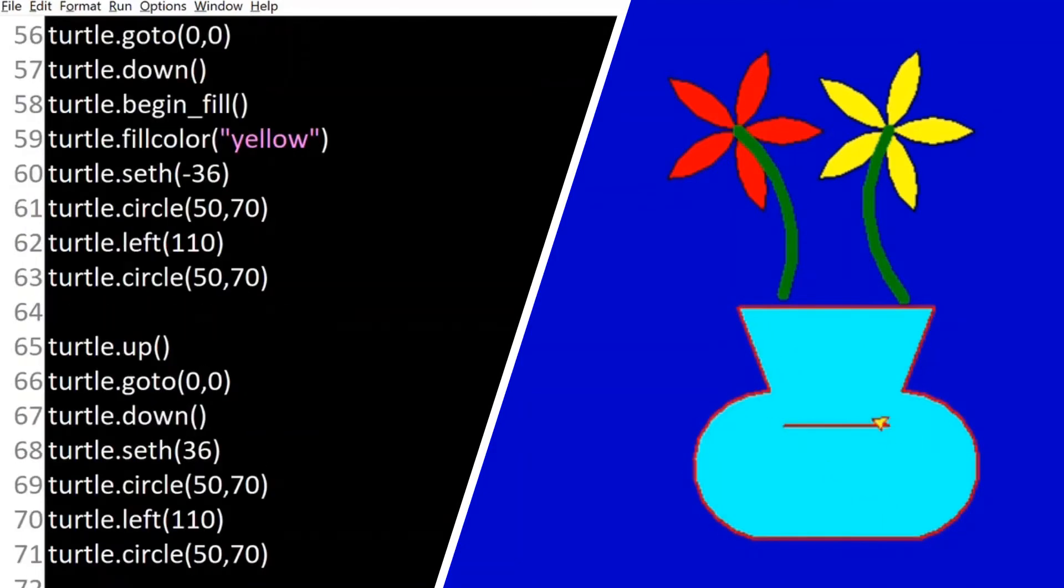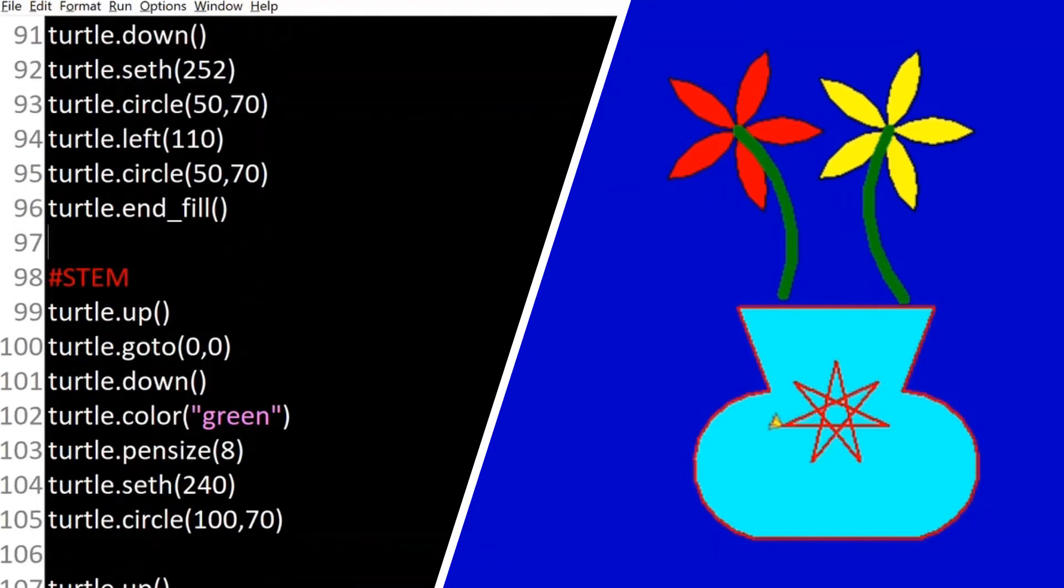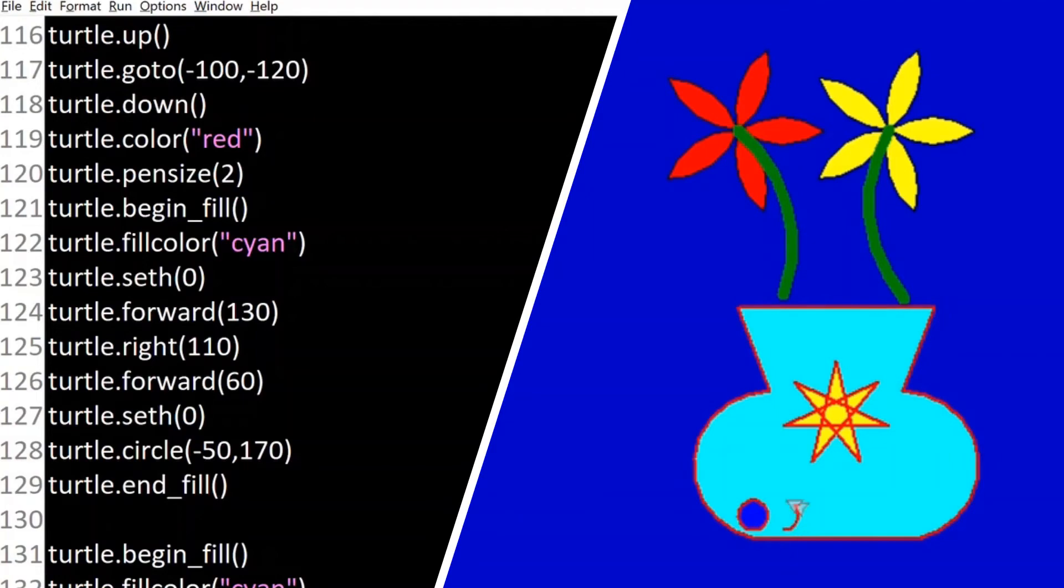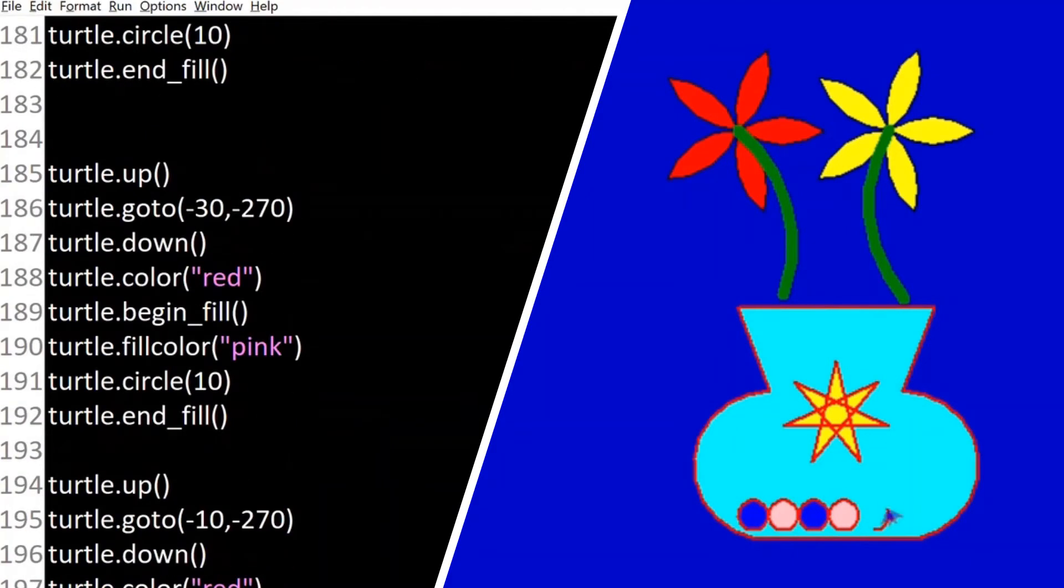Secondly, in the stem also we had used the set of arcs, the two arcs. And in the vase also there are the arcs, and we have used for loop in drawing the stars within the vase.